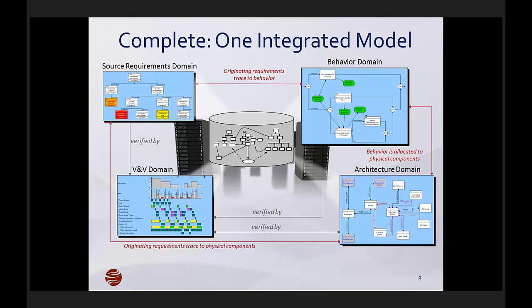This repository contains each of the artifacts and all of the relationships between those artifacts. So all the requirements, all the functions and components, and all the tests are included. It also includes other things like use cases, states, risks, concerns, interfaces — just everything that makes up the definition of a system.